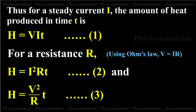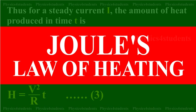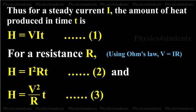Thus, for a steady current I, the amount of heat produced in time T is shown as follows. The above relations are experimentally verified by Joule and are known as Joule's law of heating. By equation 2, Joule's law implies that the heat produced is directly proportional to the square of the current for a given R.